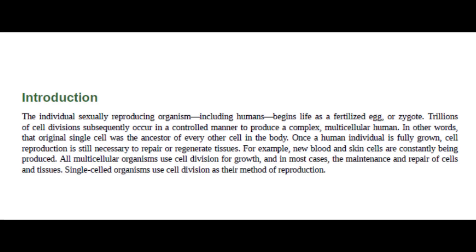Introduction: The individual sexually reproducing organism, including humans, begins life as a fertilized egg or zygote. Trillions of cell divisions subsequently occur in a controlled manner to produce a complex multicellular human. That original single cell was the ancestor of every other cell in the body. Once a human individual is fully grown, cell reproduction is still necessary to repair or regenerate tissues — for example, new blood and skin cells are constantly being produced. All multicellular organisms use cell division for growth and, in most cases, the maintenance and repair of cells and tissues. Single-celled organisms use cell division as their method of reproduction.